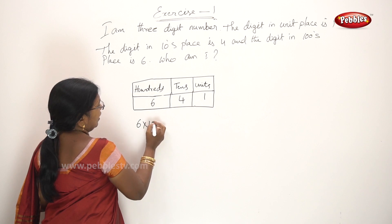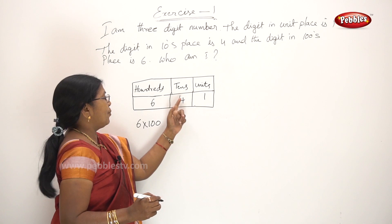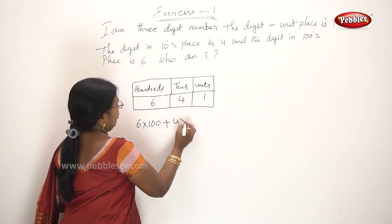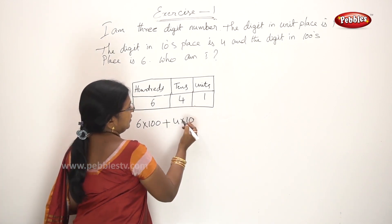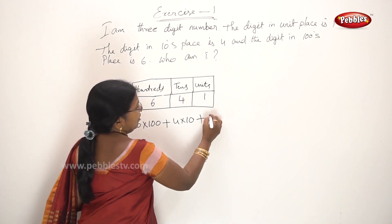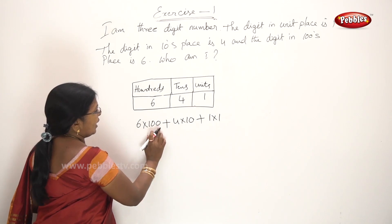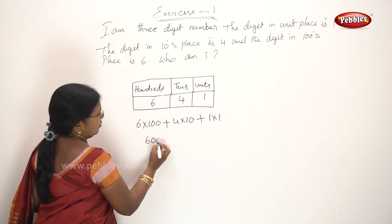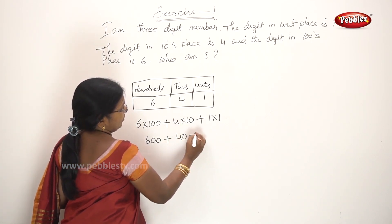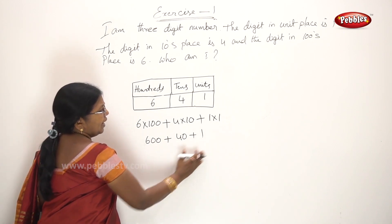Six into hundred. The tens place: four is in the tens place, so four into ten. Units place: one into one. So 6×100 = 600, 4×10 = 40, 1×1 = 1. Add them together.